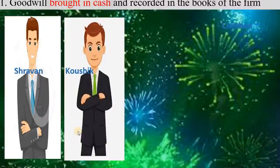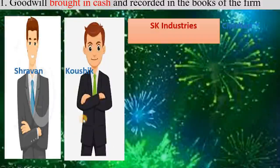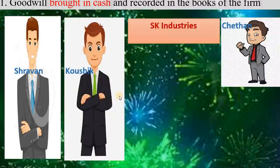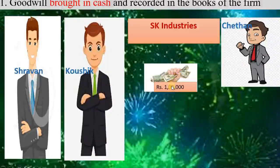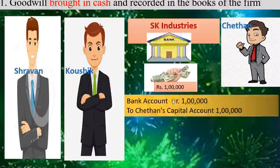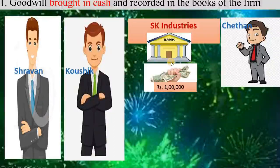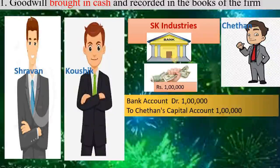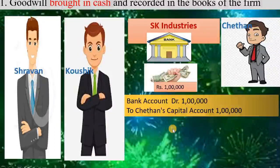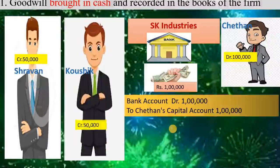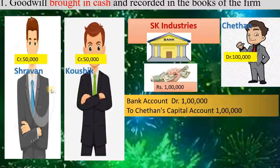Let us see these transactions with an example. Shravan and Kaushik are old partners who started SK Industries, and Chetan is a new partner. Chetan has brought 1 lakh rupees as his share of goodwill. When this amount is brought in, the firm's bank account will increase. So our entry is bank account debit to new partner's — that is Chetan's — capital account. For the second transaction, we have to distribute this goodwill amount with the old partners. This 1 lakh rupees should be shared among the old partners, credited to old partners' capital accounts.